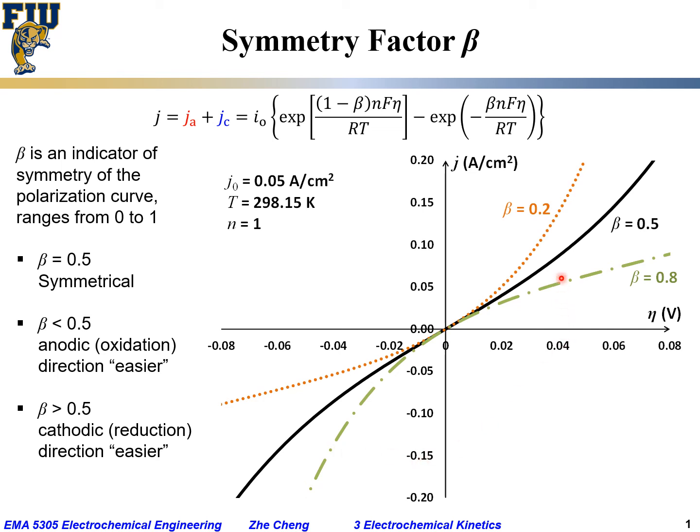So symmetry factor beta tells us the symmetry for the polarization curve, and it is symmetric when the beta value is 0.5.